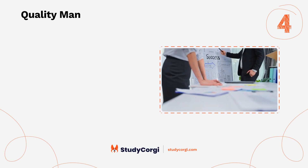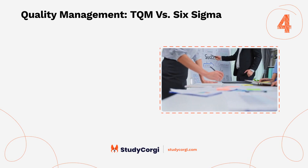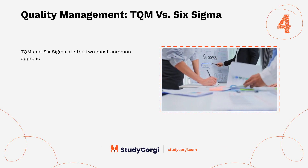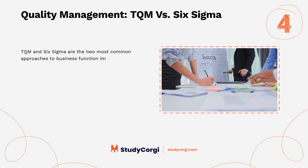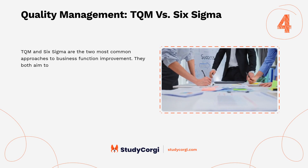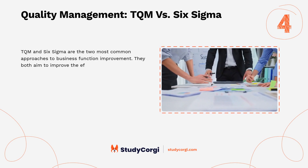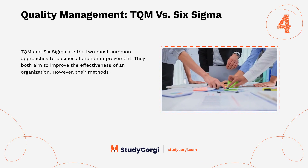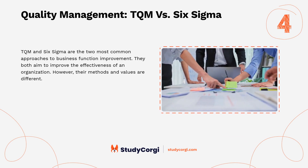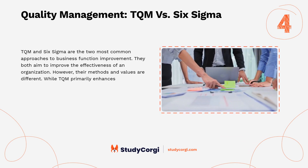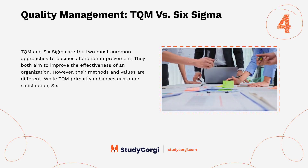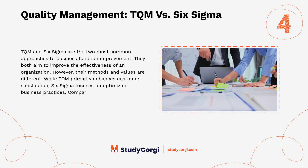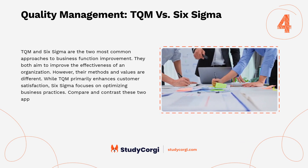Quality Management: TQM vs. Six Sigma. TQM and Six Sigma are the two most common approaches to business function improvement. They both aim to improve the effectiveness of an organization. However, their methods and values are different. While TQM primarily enhances customer satisfaction, Six Sigma focuses on optimizing business practices. Compare and contrast these two approaches in a paper.